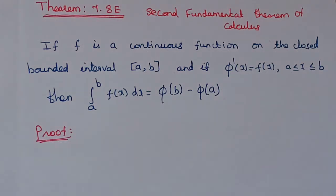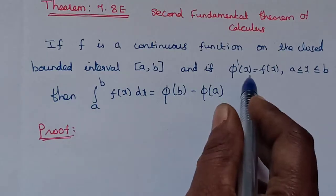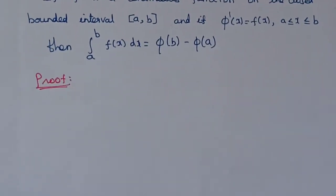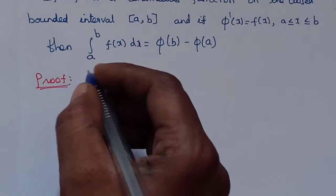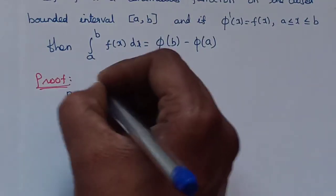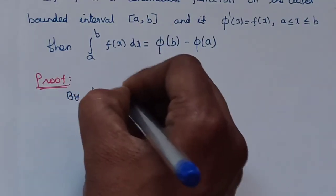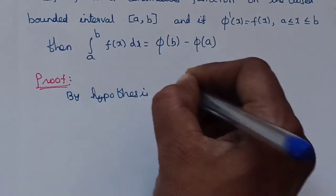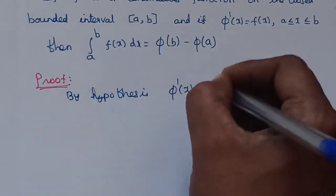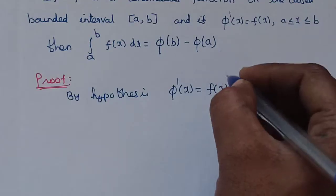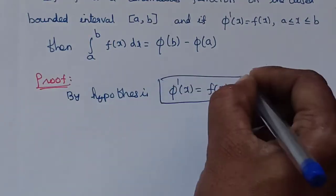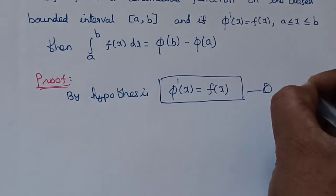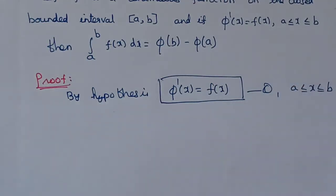We will prove this. By hypothesis, phi-dash of x equals f of x. This is equation one, where a is less than or equal to x less than or equal to b.